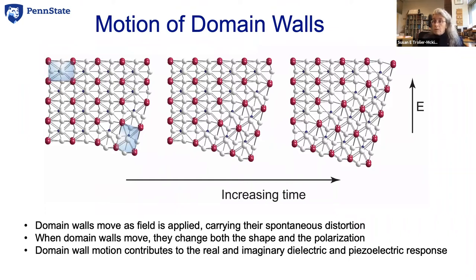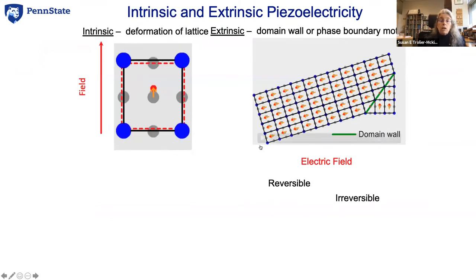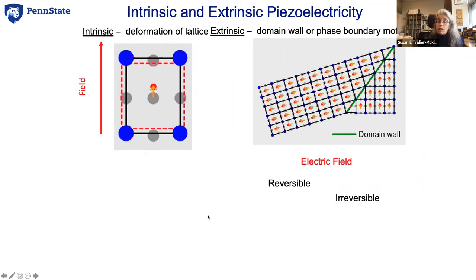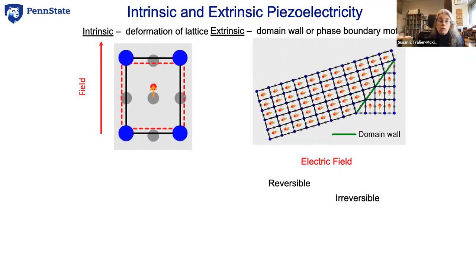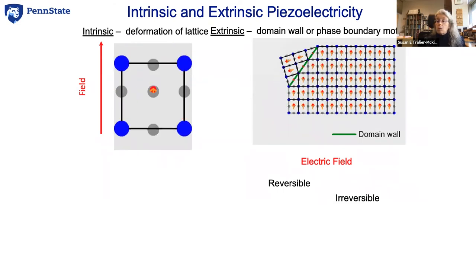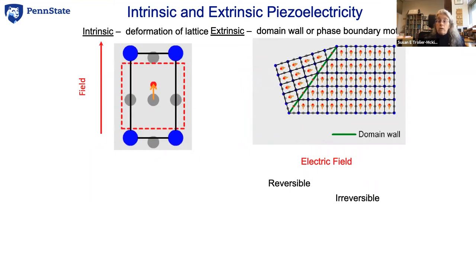Another possibility is what we call the extrinsic contribution, where I have domains with different orientations. If I can move the boundary between those orientations with an applied electric field, the material will change shape. The intrinsic piezoelectric effect changes the shape of the unit cell with the applied electric field; the extrinsic piezoelectric effect moves a domain wall with an applied electric field.